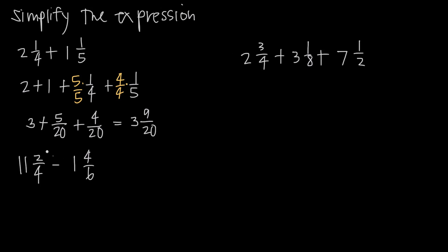Now let's look at this example with simple subtraction: 11 and 2/4 minus 1 and 4/6. Both fractions can be reduced — 2/4 reduces to 1/2 and 4/6 reduces to 2/3 — but I don't have to reduce them. When I pull my whole numbers out, I get 11 minus 1. For subtraction, I subtract my whole numbers and then add to that the difference of my fractions: plus 2/4 minus 4/6.